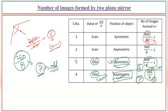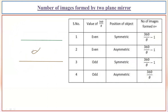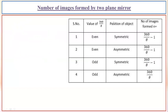One more situation: if two plane mirrors are placed parallel to each other — as you can see in a barbershop — the total number of images formed is infinity. We will not be able to say that five, four, or six images are forming. Under that situation, an infinite number of images can be formed.